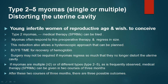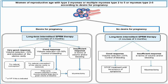For type 2 onwards up to type 5, which may be single or multiple but are distorting the uterine cavity, divide management into two sections. For reproductive age group women who desire fertility — young infertile women wishing to conceive — start with medical therapy. They often respond to preoperative therapy and regress in size, allowing a hysteroscopic approach later and giving time to correct hemoglobin. Surgery may or may not be required depending upon progress.